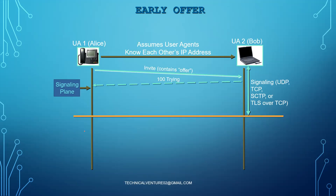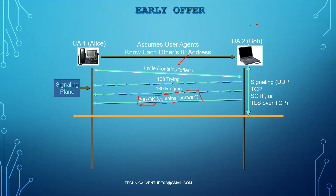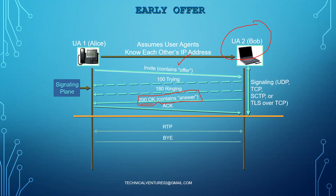In this early offer example, User Agent 1 (Alice) sends an INVITE message that contains an offer — that makes it an early offer. After receiving 100 Trying and 180 Ringing, it receives a 200 OK which contains an answer, meaning the called party has already negotiated the codecs. After the 200 OK, there is an ACK that doesn't contain anything, followed by the RTP stream and then the BYE messages.